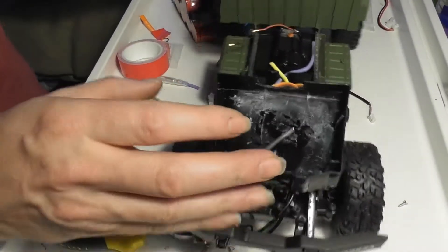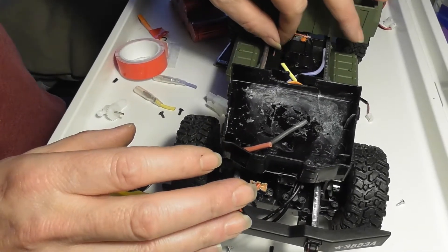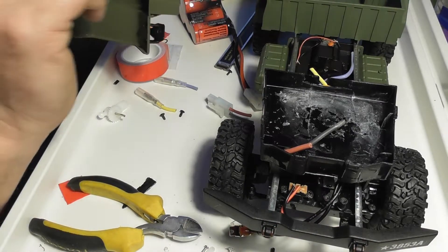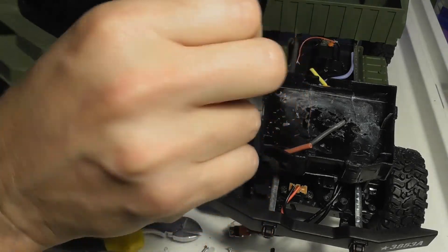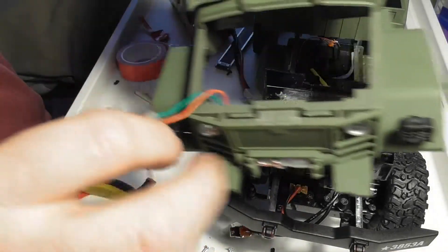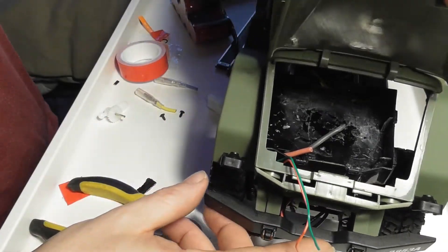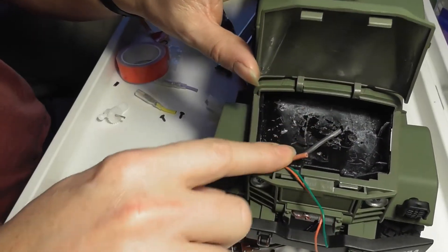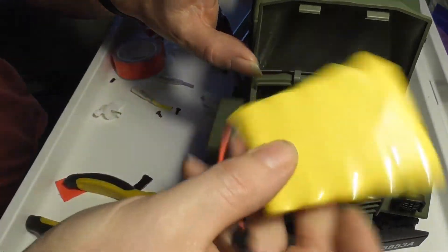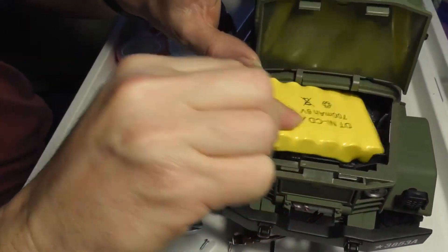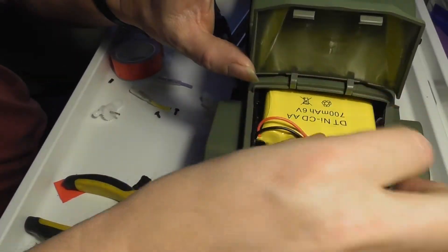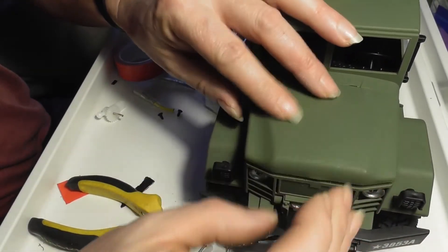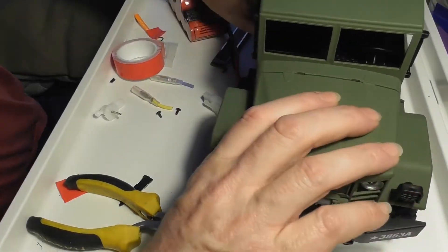I just want to quickly make sure that everything will actually fit in once the body goes on. The battery should still fit even with these little wires. That will be fine, and underneath there's plenty of room for all those wires.